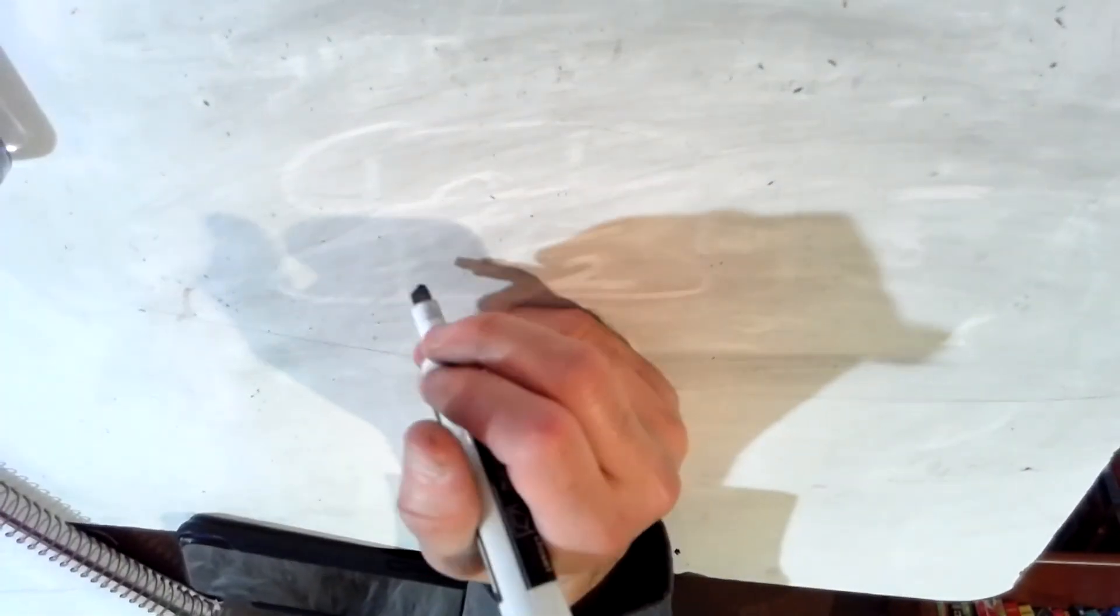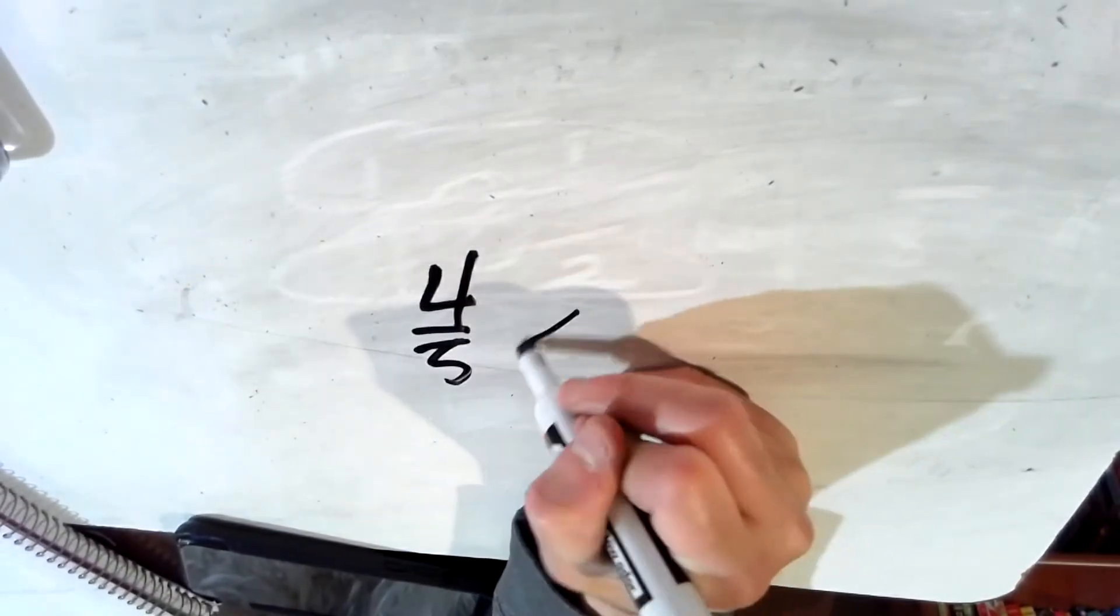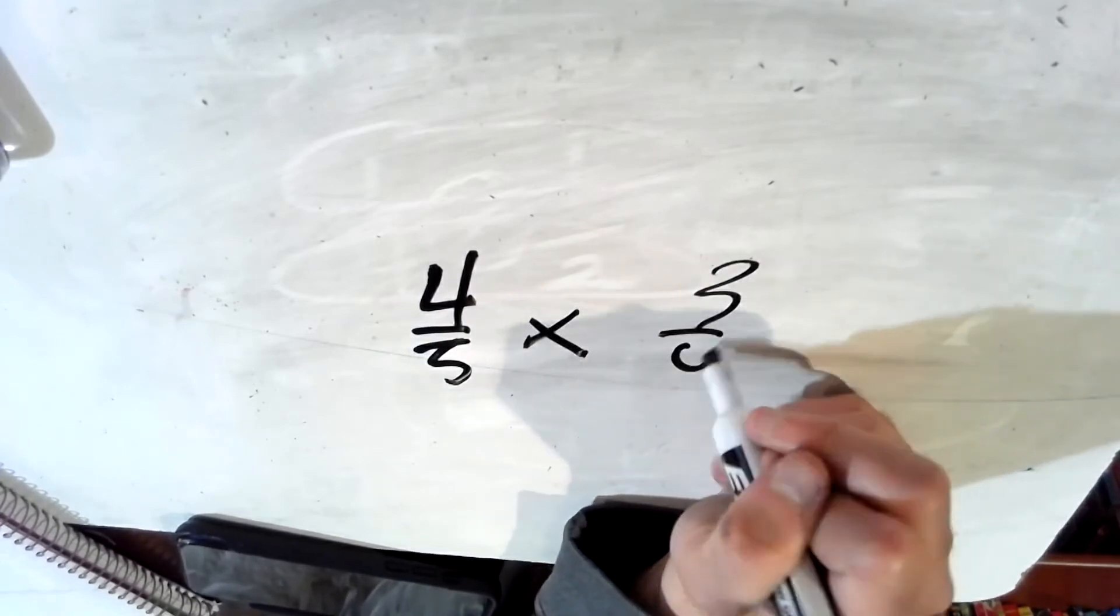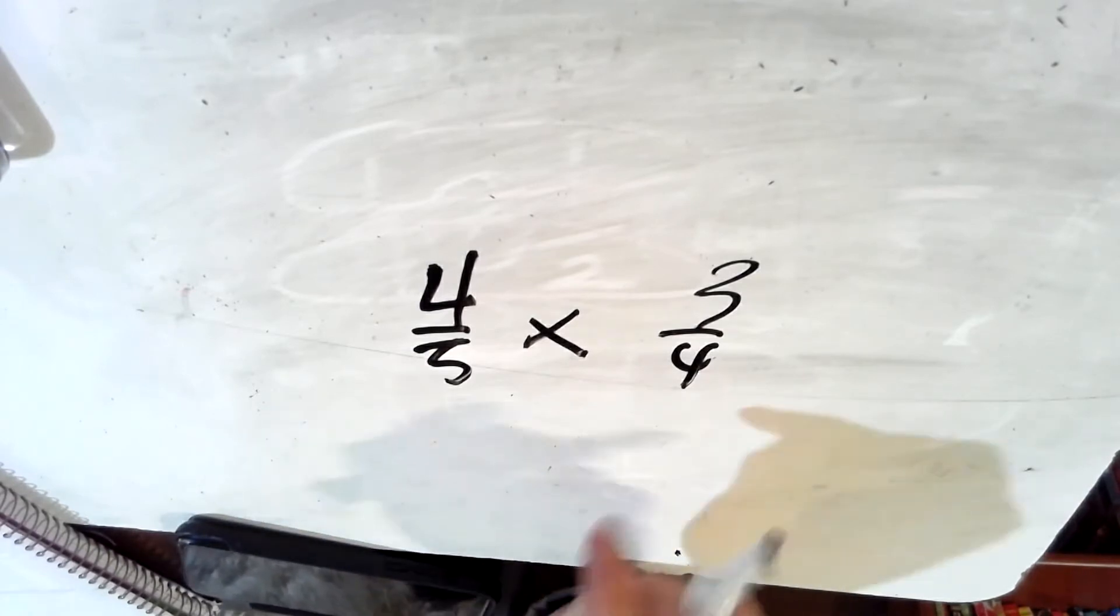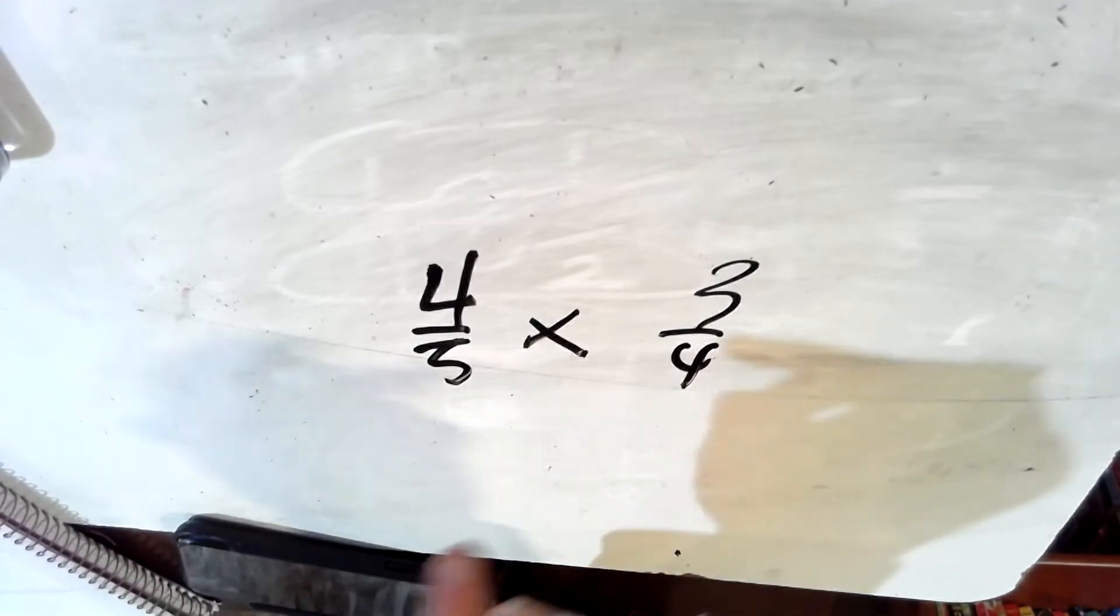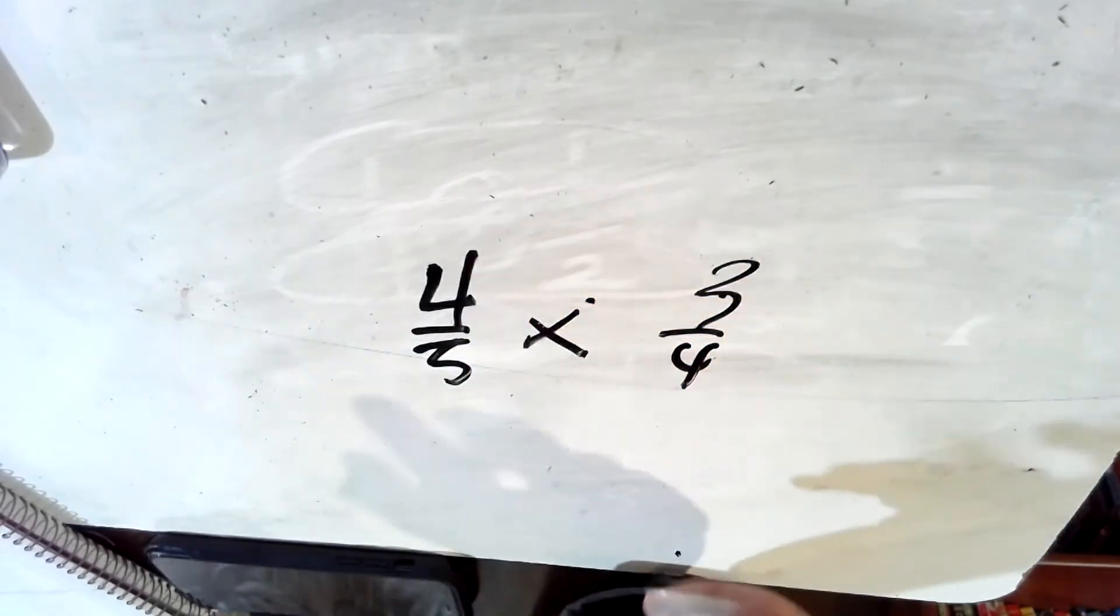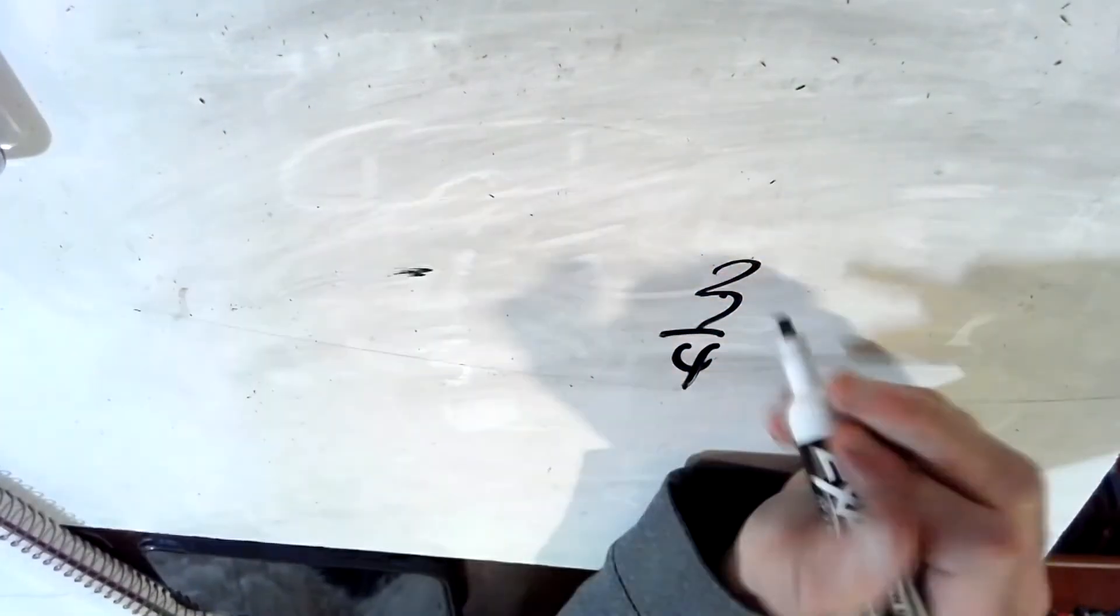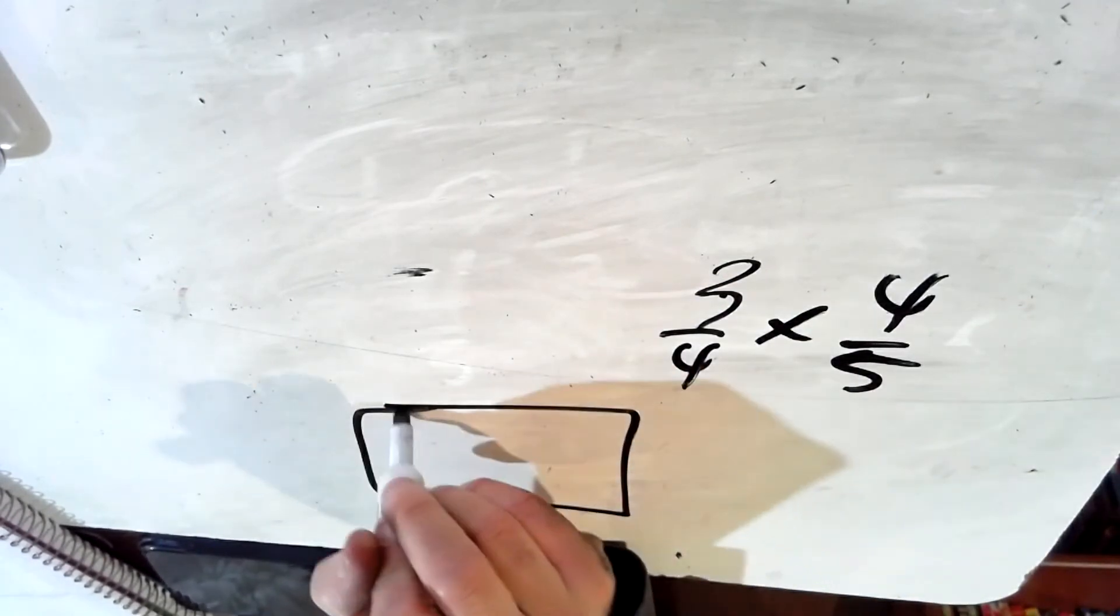Let's try another one. And that's four fifths of three fourths. Here it says Talisha owns four fifths of a section of land. She plants green beans on three fourths of her land. What fraction of the entire section is planted with green beans? Three fourths of her land. So really it's three fourths of four fifths. So let's write it this way then. Three fourths of four fifths.